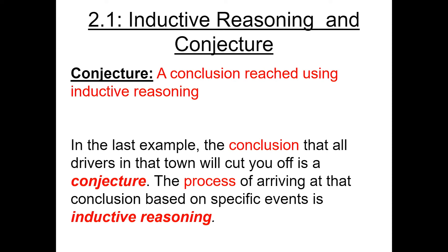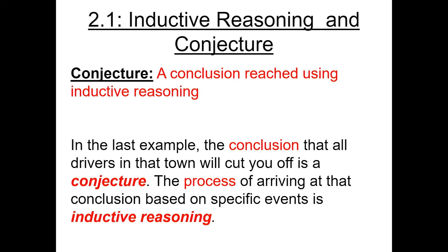One thing that we typically look at in math is, it seems kind of strange, but we try to show that we're wrong before we show that we're right. We usually do that by trying to find something called a counterexample. This is any specific thing that shows our conjecture is actually false. Any specific case, event, observation, etc. that disproves a conjecture.